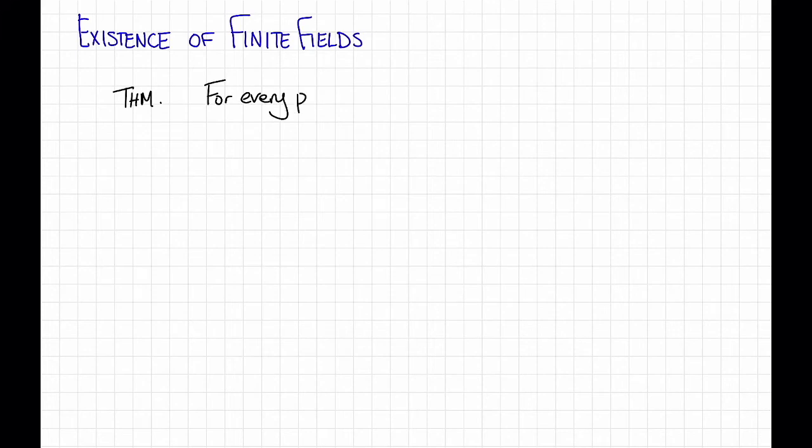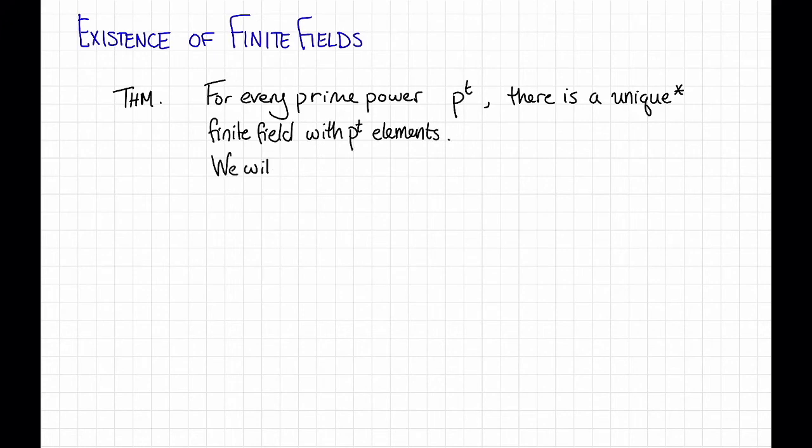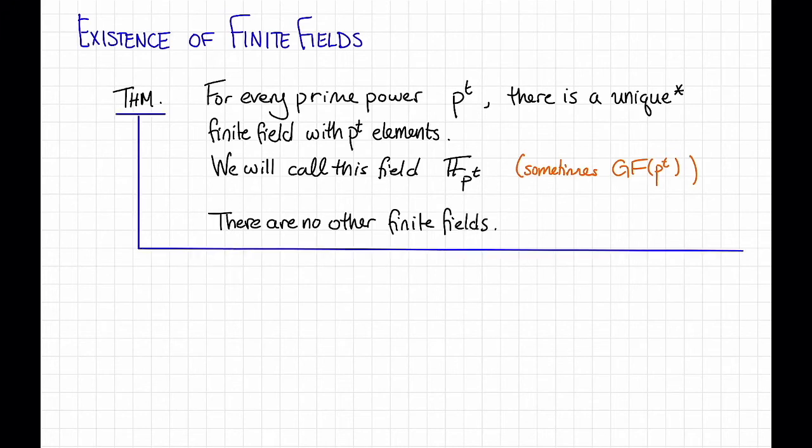Here's a theorem. For every prime power p to the t, so here p is prime, there is a unique finite field with p to the t elements. In this course, we will call this field F sub p to the t. You might also see it denoted as GF p to the t. GF stands for Galois field. Further, there are no other finite fields.